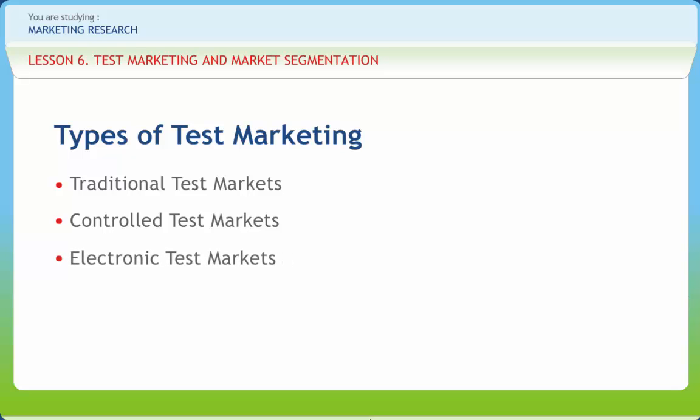Electronic test markets are those in which a panel of consumers have agreed to carry identification cards that each consumer presents when buying goods and services. Simulated test markets are those in which a limited amount of data on consumer response to a new product is fed into a model containing certain assumptions regarding planned marketing programs, which generates likely sales volumes.